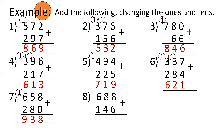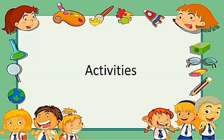Number 8: 688 plus 146 — 8 plus 6 is 14, bring down 4, carry 1 to tens place. 8 plus 4 is 12, plus 1 is 13, bring down 3, carry 1 to hundreds. 6 plus 1 is 7 plus 1 is 8. Answer is 834.